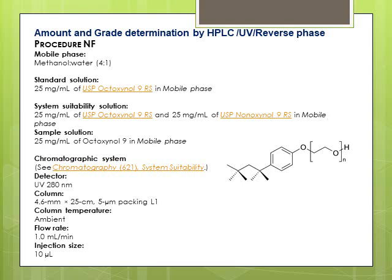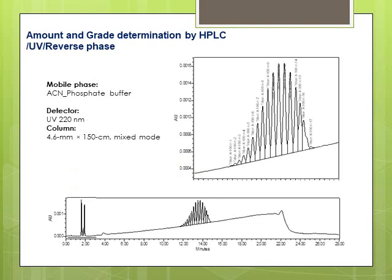This is a chromatogram of octoxinol 9, or Triton X100, using different HPLC conditions than the USP method. The detection is at 220 nanometers; the column is C18 but shorter; and the mobile phase is acetonitrile and phosphate buffer. Triton X100 is shown as almost 17 individual peaks, demonstrating that the material is actually a mixture of different molecules. With this technique, the amount of Triton X100 can be determined, and because of the peak profile, the grade can also be determined.